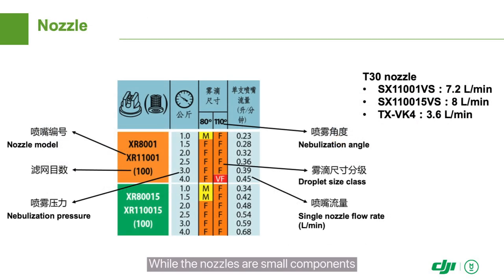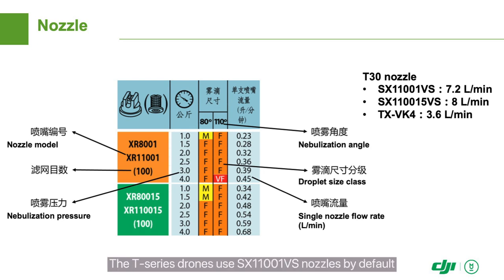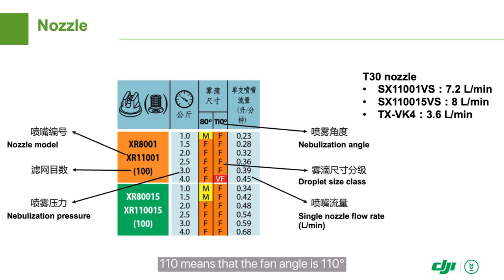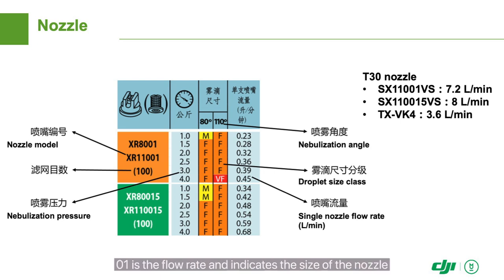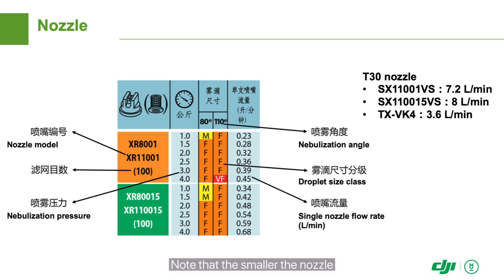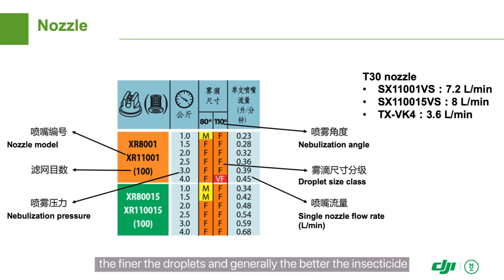While the nozzles are small components, they have a major impact on spraying performance. The T-Series drones use SX-110-01VS nozzles by default. SX means that the nozzle is a fan shape. 110 means that the fan angle is 110 degrees. 01 is the flow rate and indicates the size of the nozzle. And VS means that the nozzle is made of stainless steel. Note that the smaller the nozzle, the finer the droplets, and generally the better the insecticide or fungicide spraying performance. However, the droplets are then more prone to drift and evaporation.